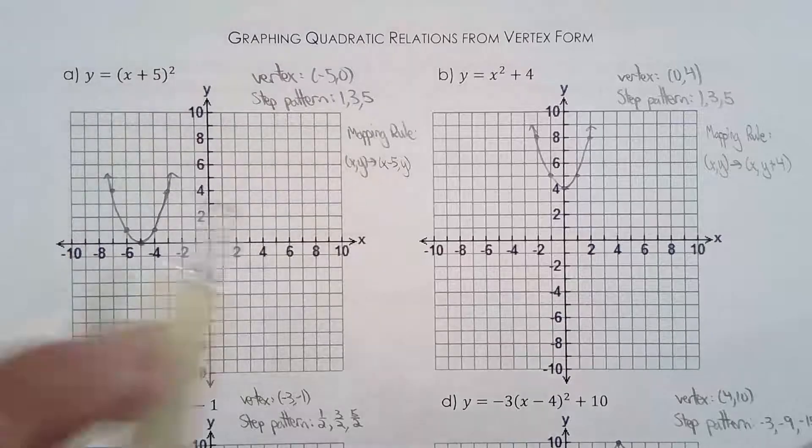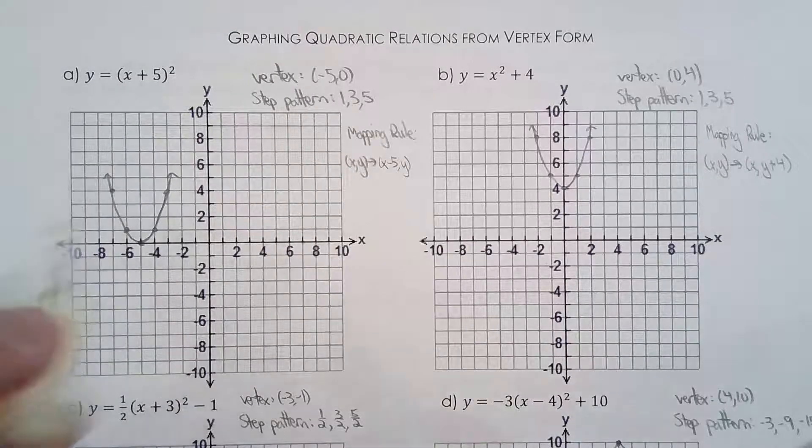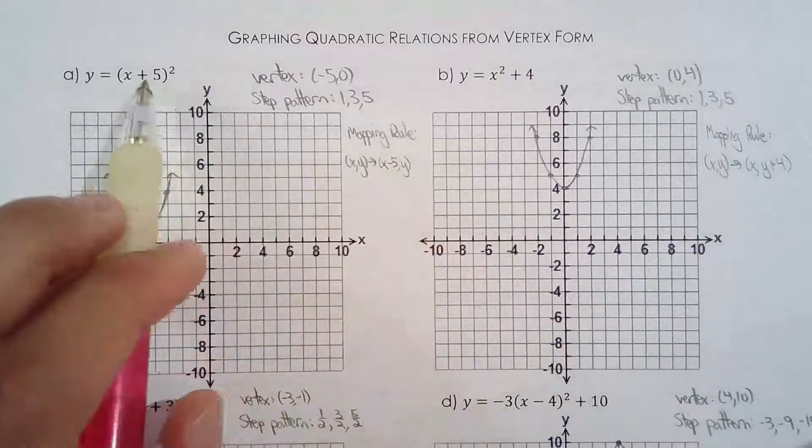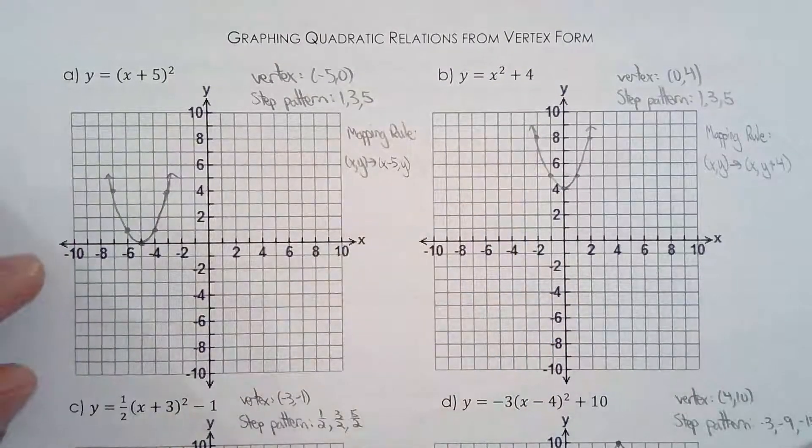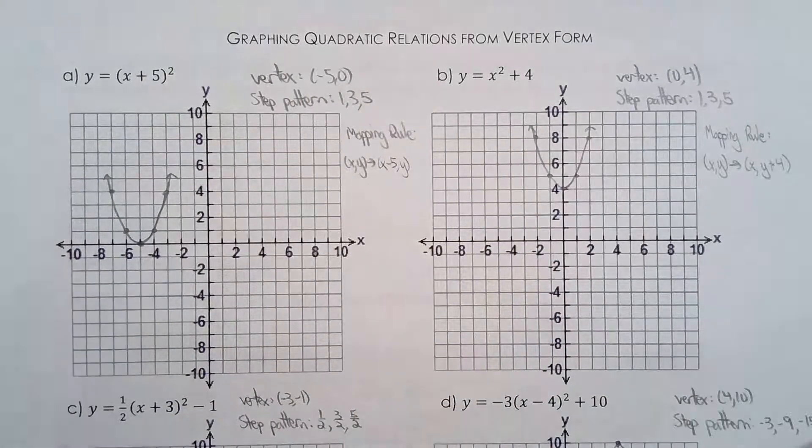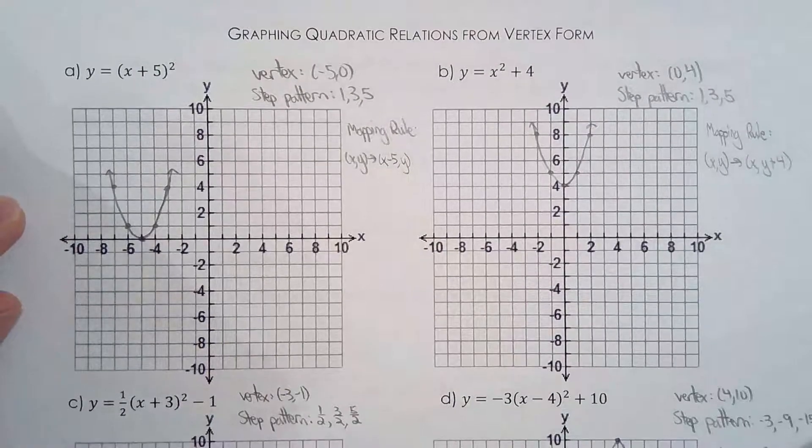So 1a and 1b are pretty straightforward. You're really just applying one single transformation. Five units left, four units up, so not much to say there. Step pattern is still 1, 3, 5, like the original step pattern.